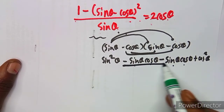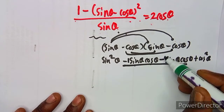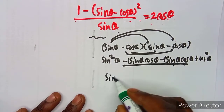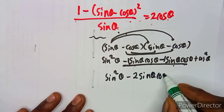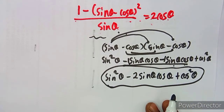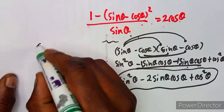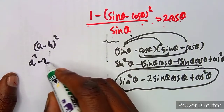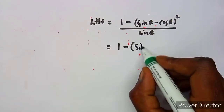Collecting like terms — the two middle terms are both minus sine theta cos theta, so they combine to minus two sine theta cos theta. We also get plus cos squared theta. Note: you can also use the algebraic identity (a − b)² = a² − 2ab + b² directly, so you don't necessarily need to show this working in full.